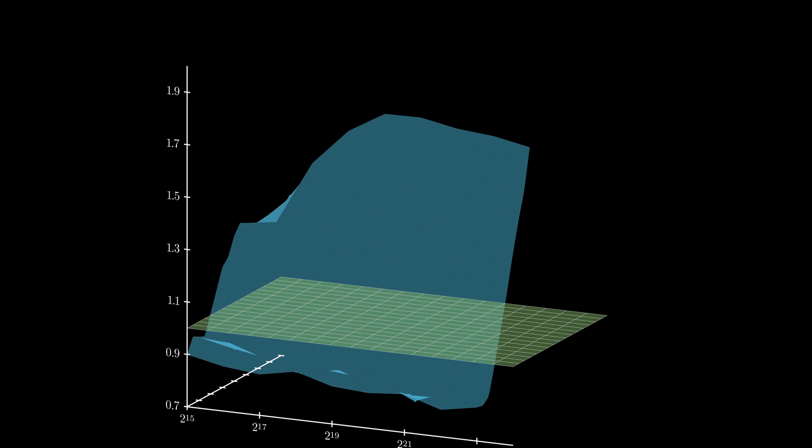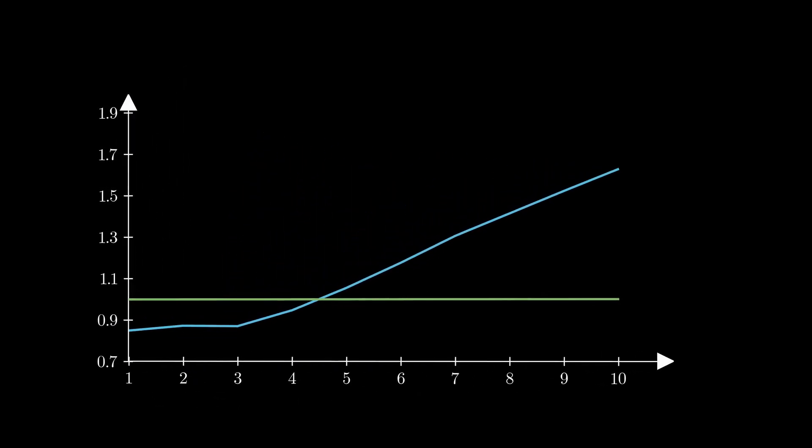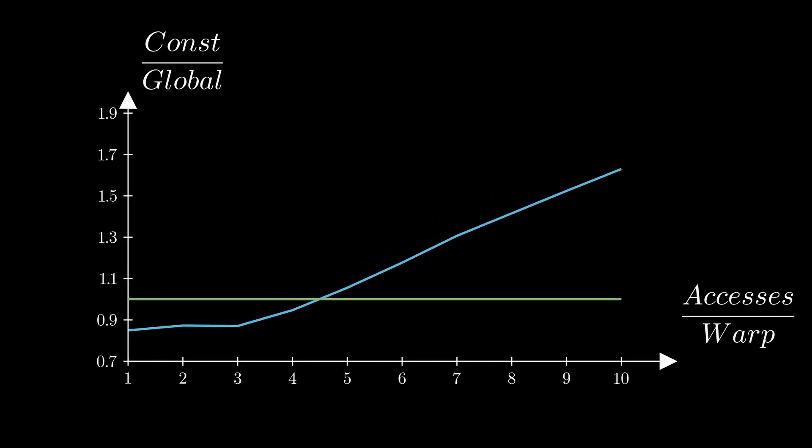This graph is now getting a bit hard to read and reason about, so what I'm going to do is average the ratios for different input sizes. We can now clearly see that it's around 4 accesses per warp when we are still getting some improvements over global, and beyond that point we are just falling behind.